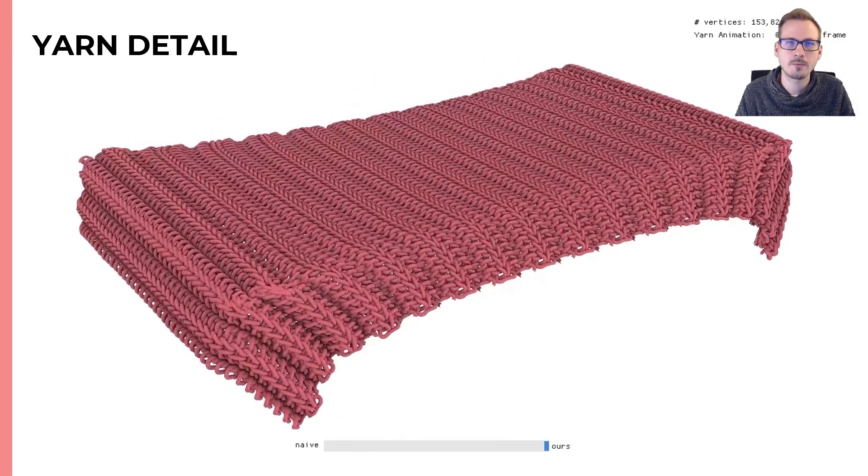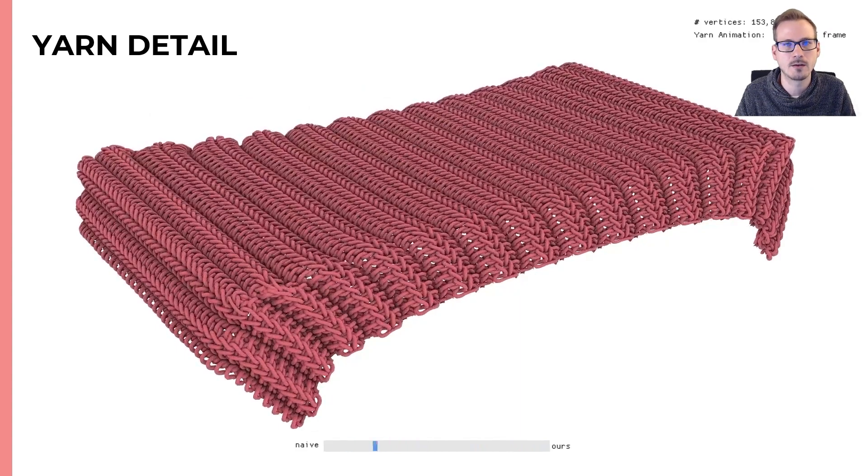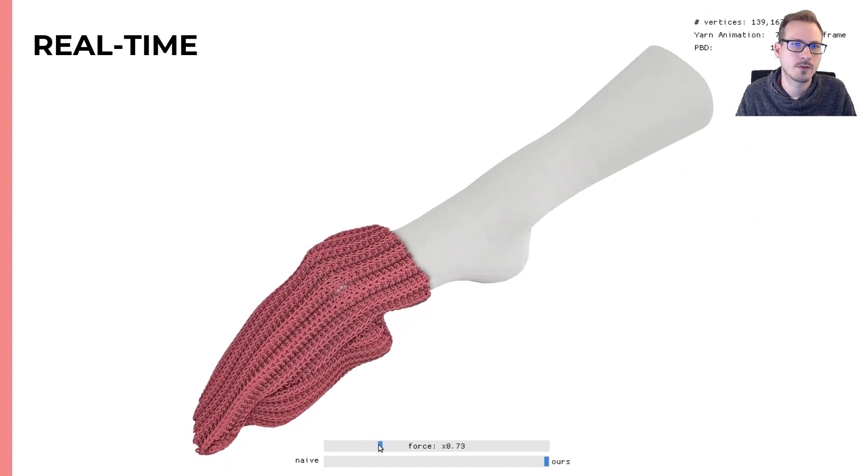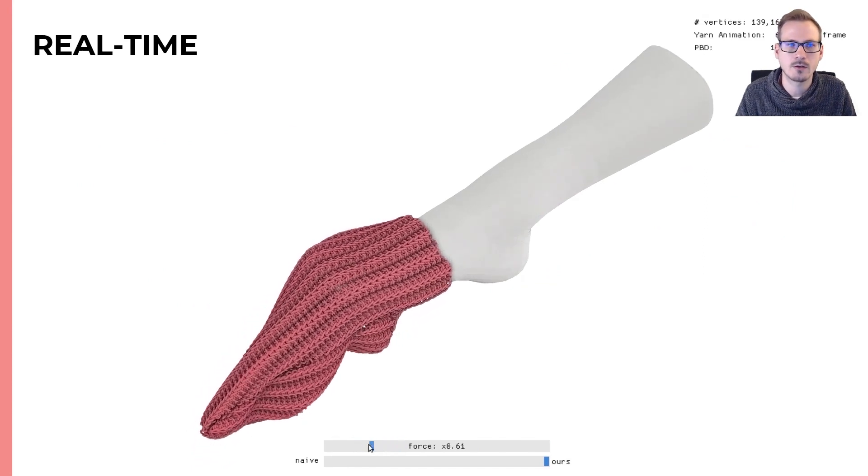In this example, our method reproduces the ribs flattening, which is missing in the naive approach. This method is real-time, and so we can interactively pull a sock over a foot.